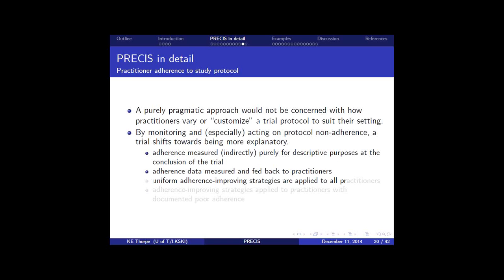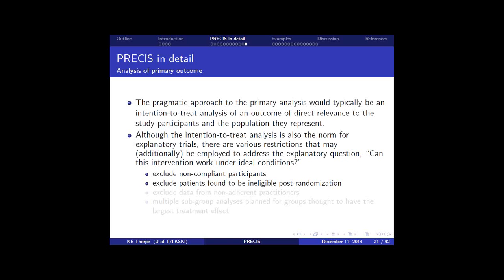So all that is just to be completeness and statistically accurate, I suppose. Now, intention to treat is also the norm for explanatory trials. There are also various restrictions that may additionally be employed to address an explanatory question, can this intervention work under ideal conditions? So you might exclude those non-compliant participants. You exclude ineligible post-randomization, non-adherent practitioners, multiple subgroup analyses planned for groups thought to have the largest treatment effect. So you'd have a variety of pre-planned analyses that are aimed to look at that explanatory question to control or remove those things that are a nuisance to seeing the treatment effect if it's there. All right, so that's a dense few slides, I realize. So we can take a few minutes now to pause for some questions on those.